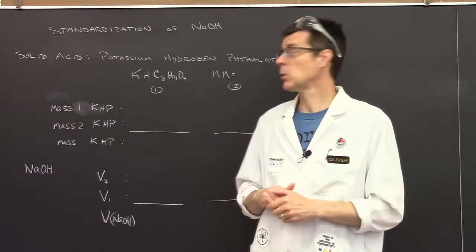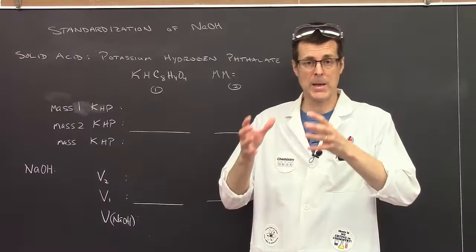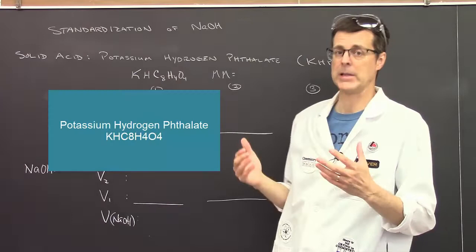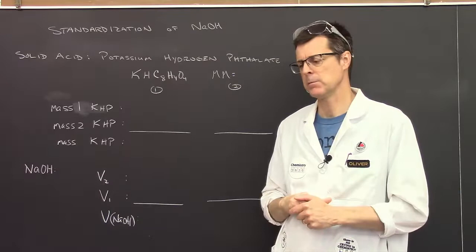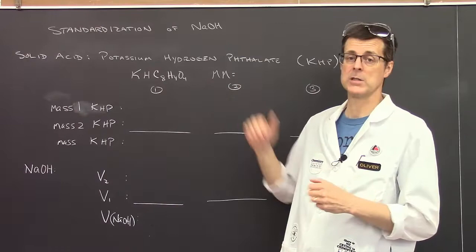What I'm going to use is something I know for sure: a mass of solid acid. I'm going to take an acid called potassium hydrogen phthalate, with this molecular formula. You're going to need not only the molecular formula but also the molar mass.